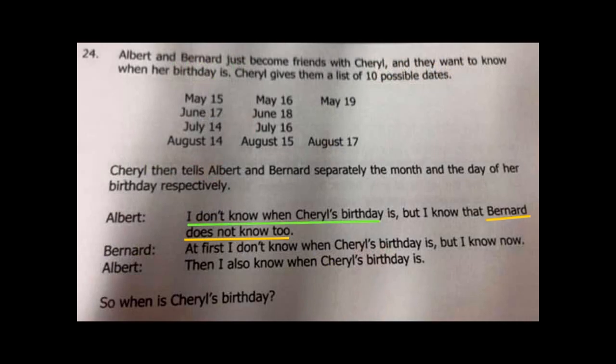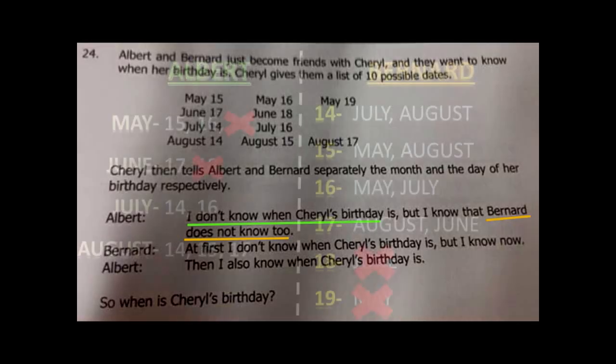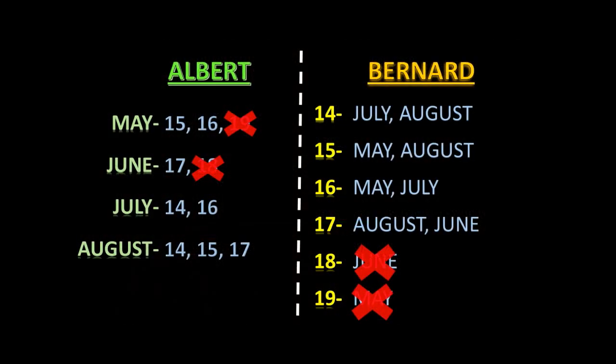Now let us look at the second criteria. Albert also stated that he does not know when Cheryl's birthday is. So May now has two possible options left — 15th and 16th — June has 17th, July has all of its dates left, and August does too. Now June has only 17th left, so if June 17th were Cheryl's birthday, Albert could have known it. But Albert himself stated that he didn't know when Cheryl's birthday was, so June 17th goes out of the list.